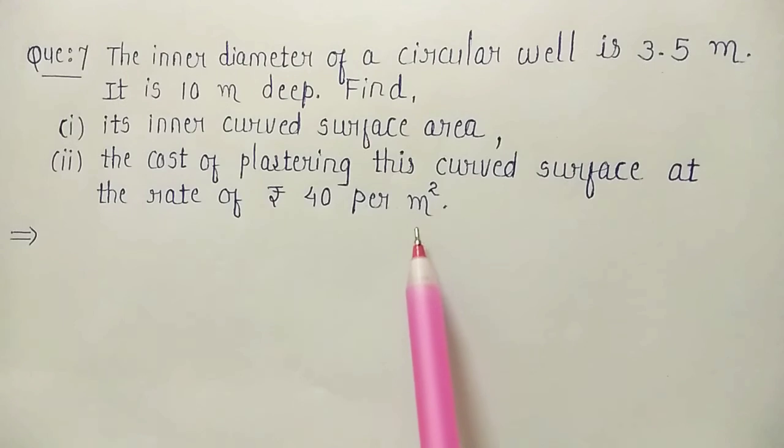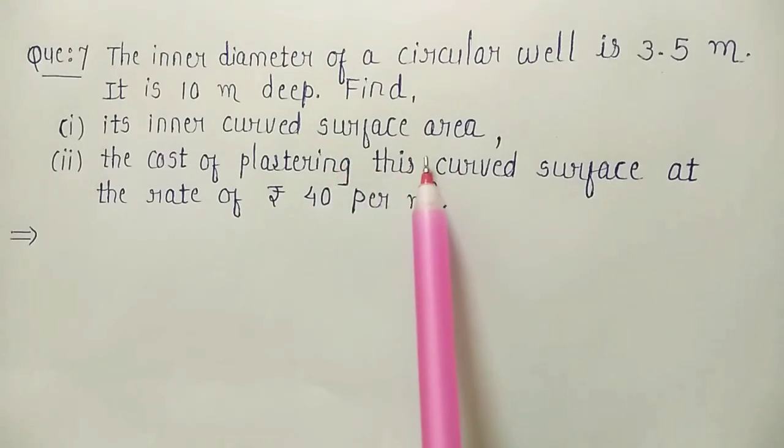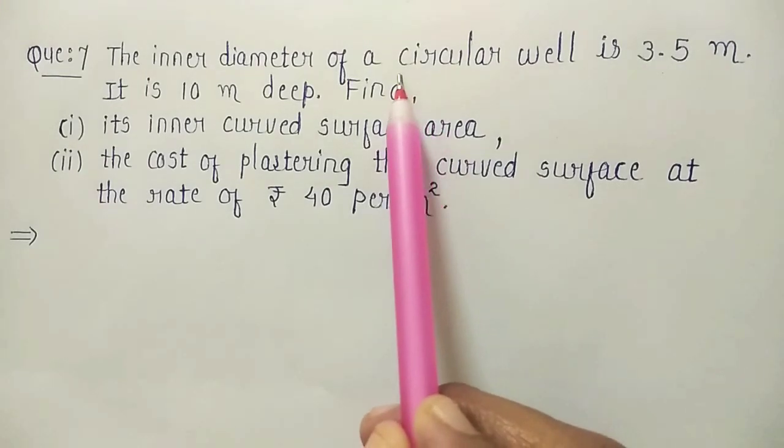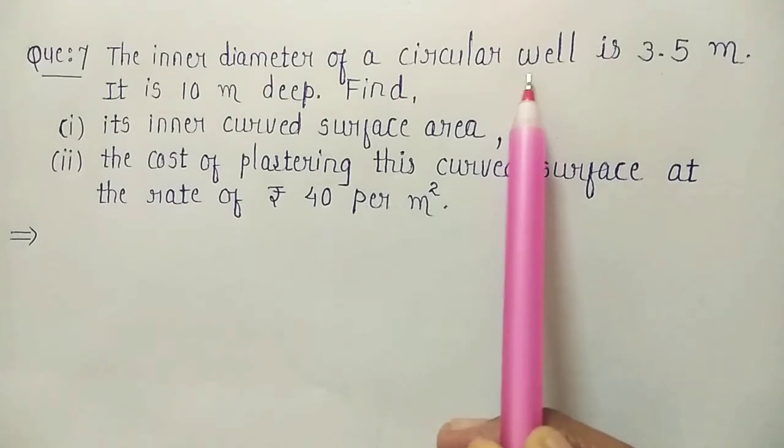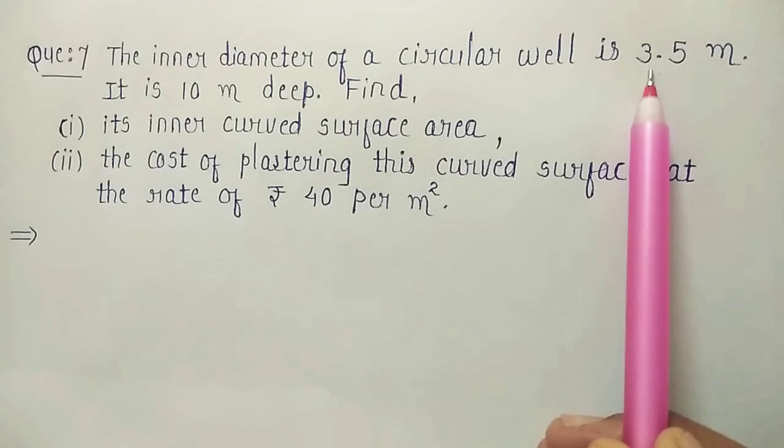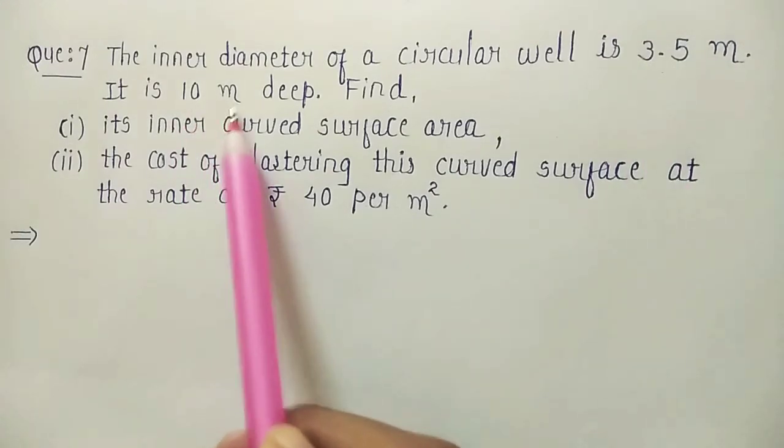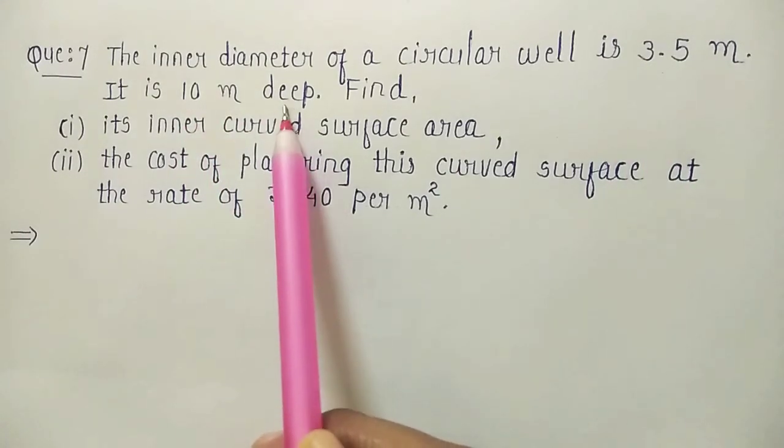What is the formula to find inner curved surface area? The curved surface area of a cylinder is 2 pi RH. Here, it is given that it is a circular well, which means it is in the form of a cylinder. Diameter is given and 10 meter deep, which is height.